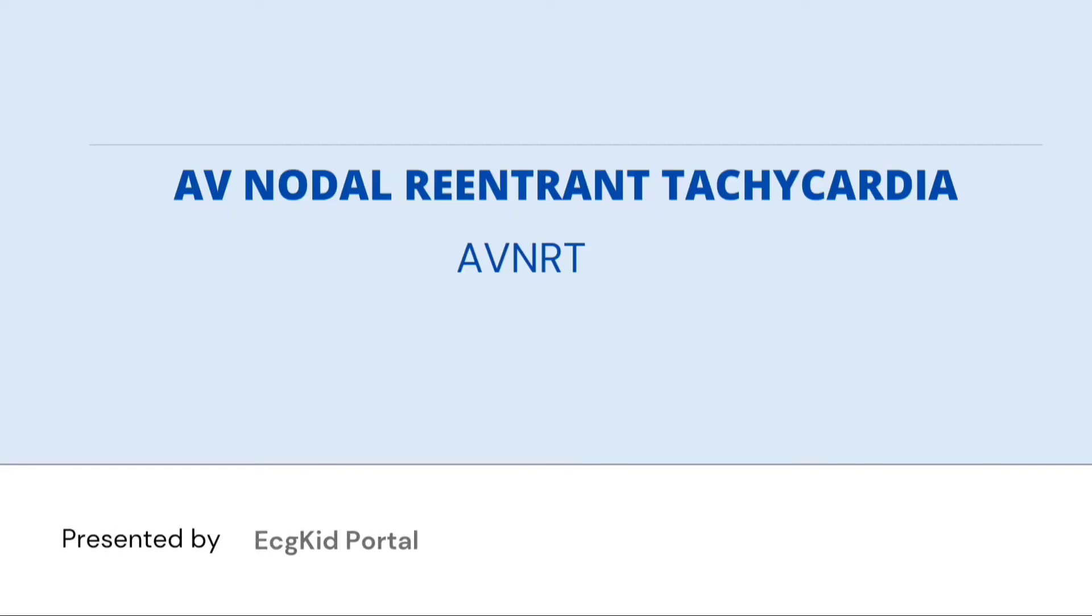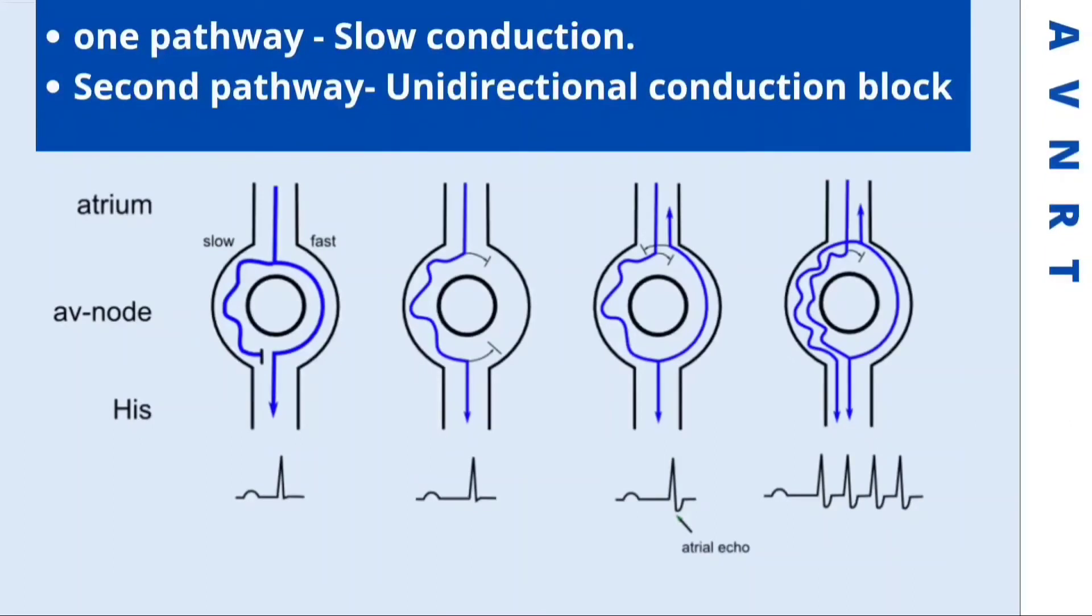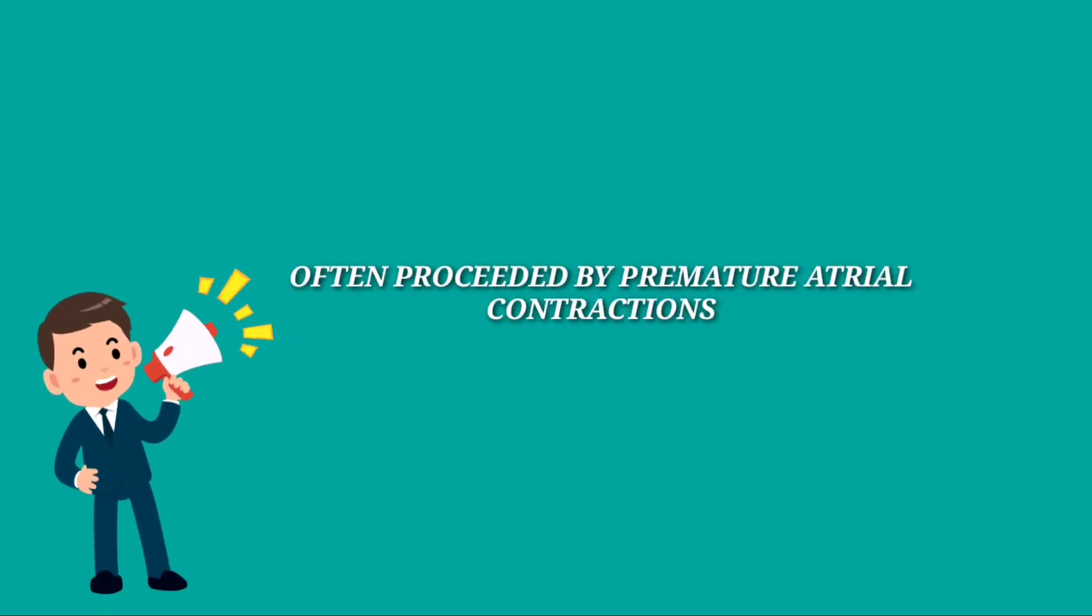AVNRT is a re-entrant dysrhythmia that depends on the presence of two separate AV nodal pathways, where one pathway has slow conduction and the other has a unidirectional conduction block. This is a regular rhythm with a typical ventricular rate of 140-200 per minute, with abrupt onset and termination. Note that it is often preceded by premature atrial contractions.